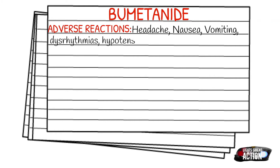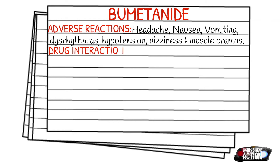Drug interactions: NSAIDs can reduce the diuretic effect of bumetanide. Antihypertensives and diuretics can further fluid depletion, exacerbating the fluid depletion that Bumex causes. There is also toxicity risk with lithium and digoxin.